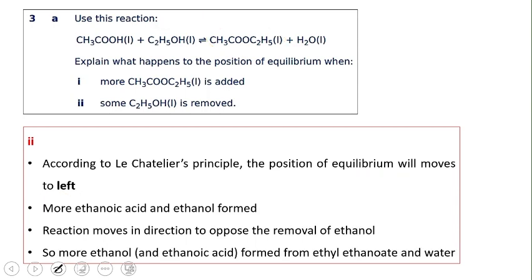If we remove some C₂H₅OH, which is a reactant, Le Chatelier's principle states that the reaction will try to minimize this change by producing more of the reactant. The equilibrium will shift toward the left — toward the reactant side — so that C₂H₅OH can be replenished from products converting back to reactants.